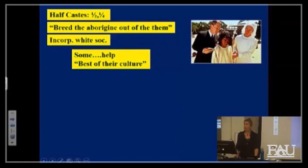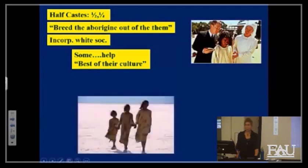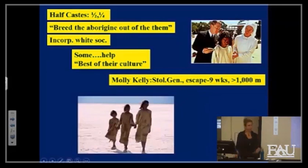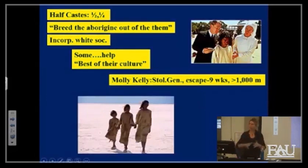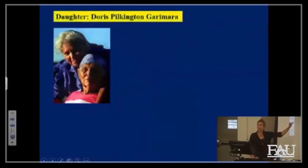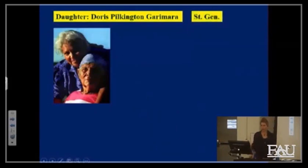You guys are seeing Rabbit Proof Fence — it's interesting, it's beautiful, it's not a real upper. It's based on a true story: Molly Kelly. She was part of the Stolen Generation — they took her from her family to a white institution, and the film shows it in a very dramatic way. Then you see her escape. She walks over a thousand miles, this kid, to get back to where she's from. It's an incredible story.